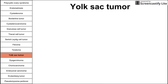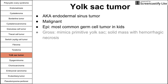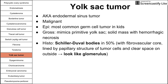Next is the yolk sac tumor, also called the endodermal sinus tumor. These are usually malignant and are the most common germ cell tumors in children. Grossly they look like a primitive yolk sac with a solid mass and hemorrhagic necrosis. Histology has characteristic Schiller-Duval bodies, which look like a glomerulus. Clinically, yolk sac tumors have increased serum AFP, which is an important tumor marker to know.